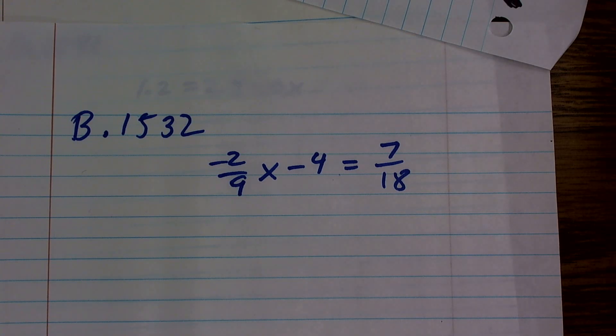All right, it is your lucky day. What we have here is negative 2/9 times x minus 4 equals 7/18.